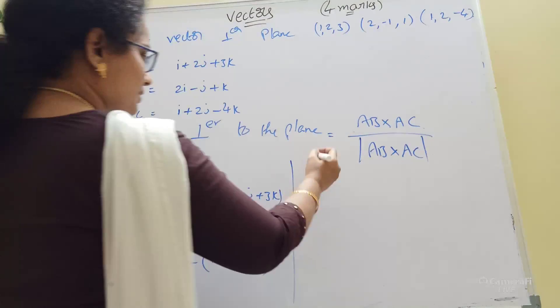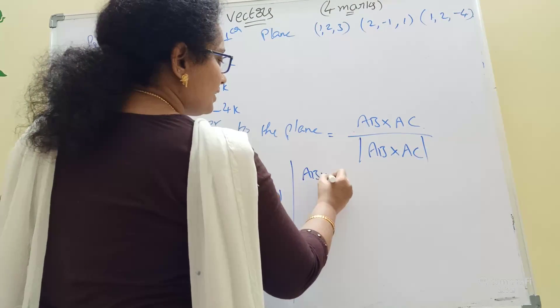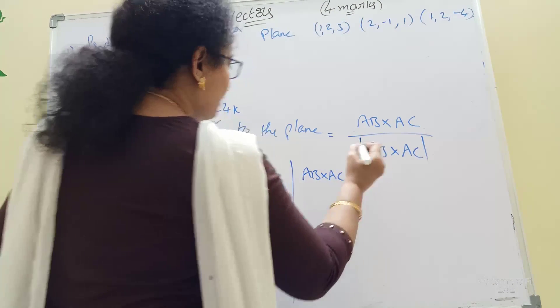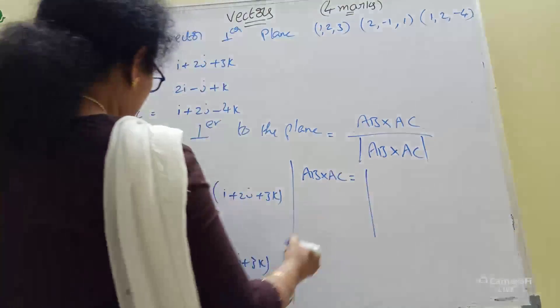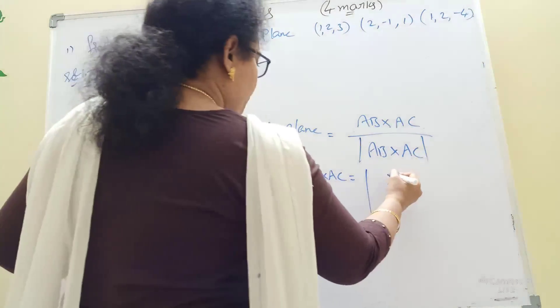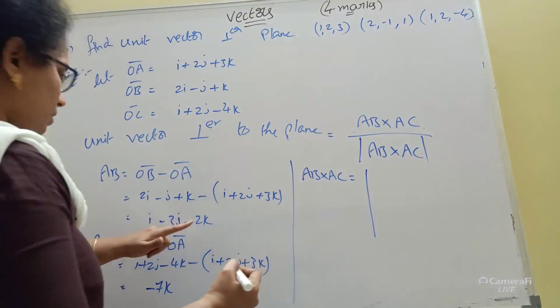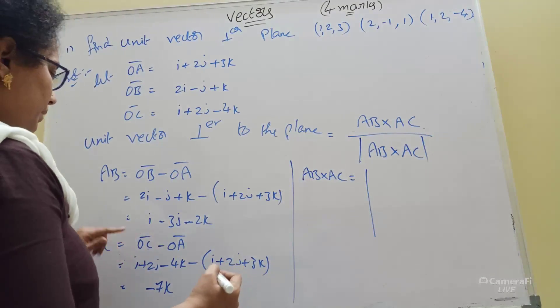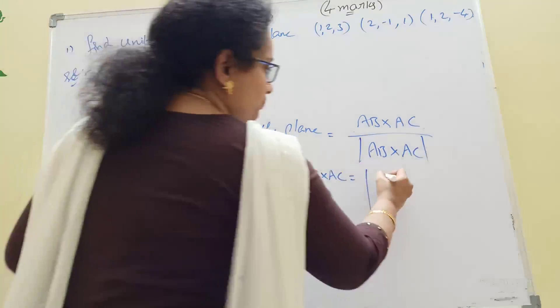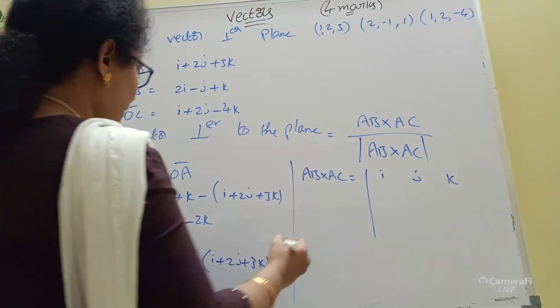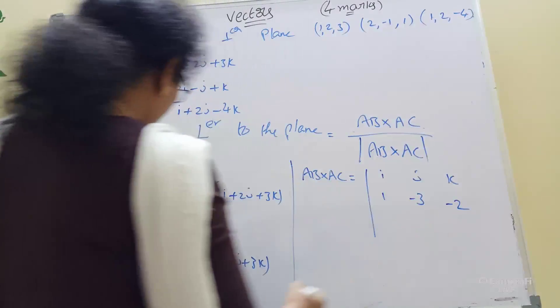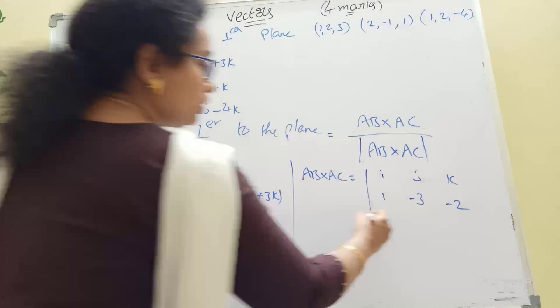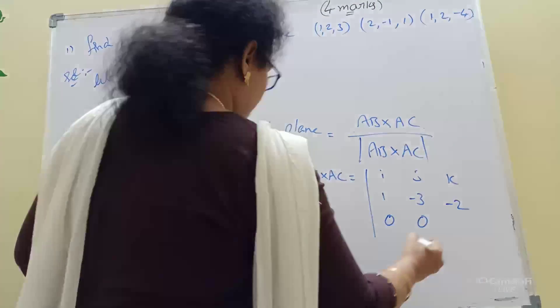Now AB cross AC. Setting up the determinant with i, j, k. AB row is 1, minus 3, minus 2. AC row is 0, 0, minus 7.